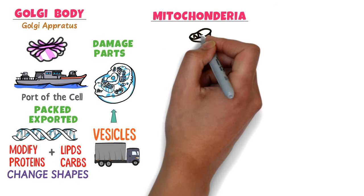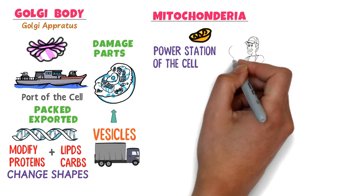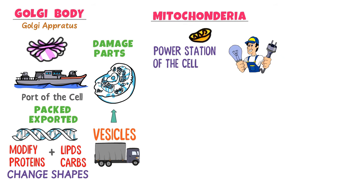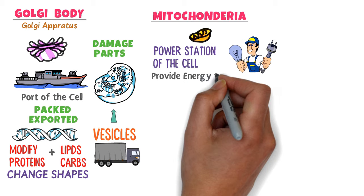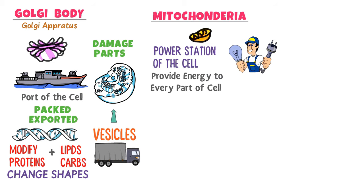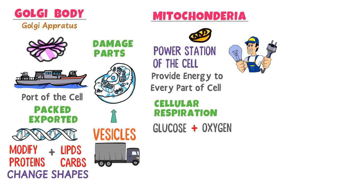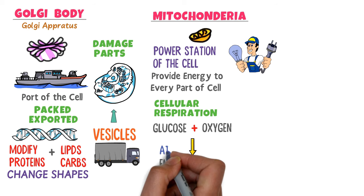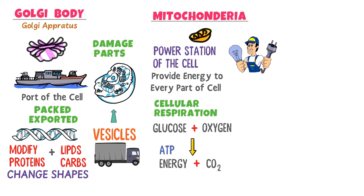What is mitochondria? Mitochondria is the power station of the cell. Just as a power station provides electricity to a city, mitochondria provides energy to each and every part of the cell. Mitochondria also contains its own DNA, different from the DNA of the nucleus. In mitochondria, cellular respiration takes place — for example, glucose combines with oxygen to release energy in the form of ATP, and carbon dioxide is produced as a waste product. This ATP energy is then transported to each and every part of the cell.